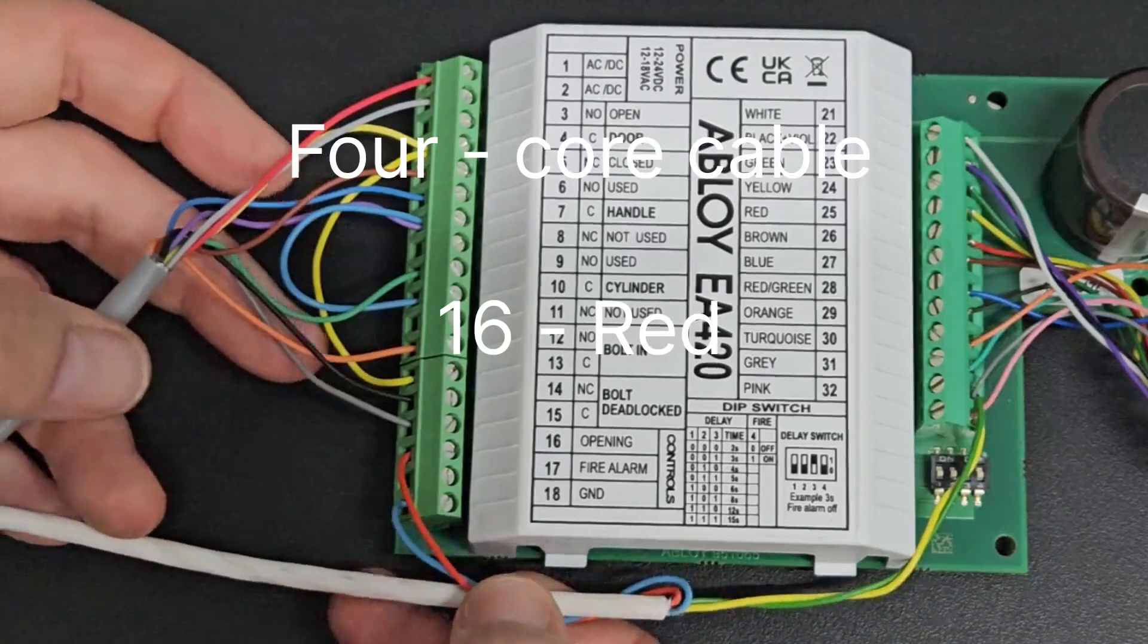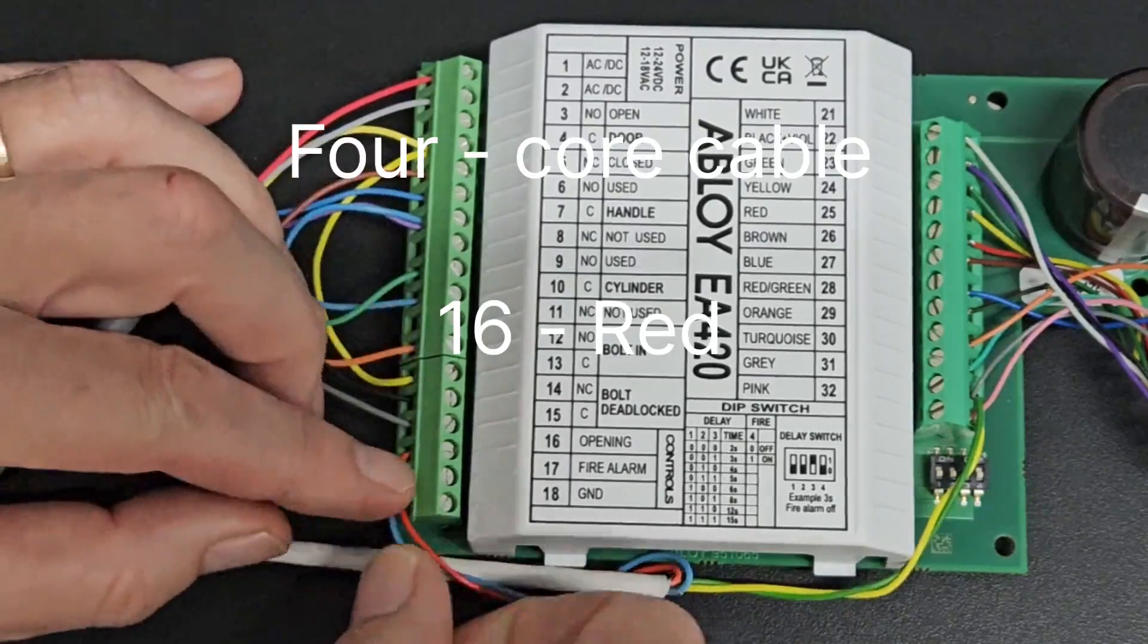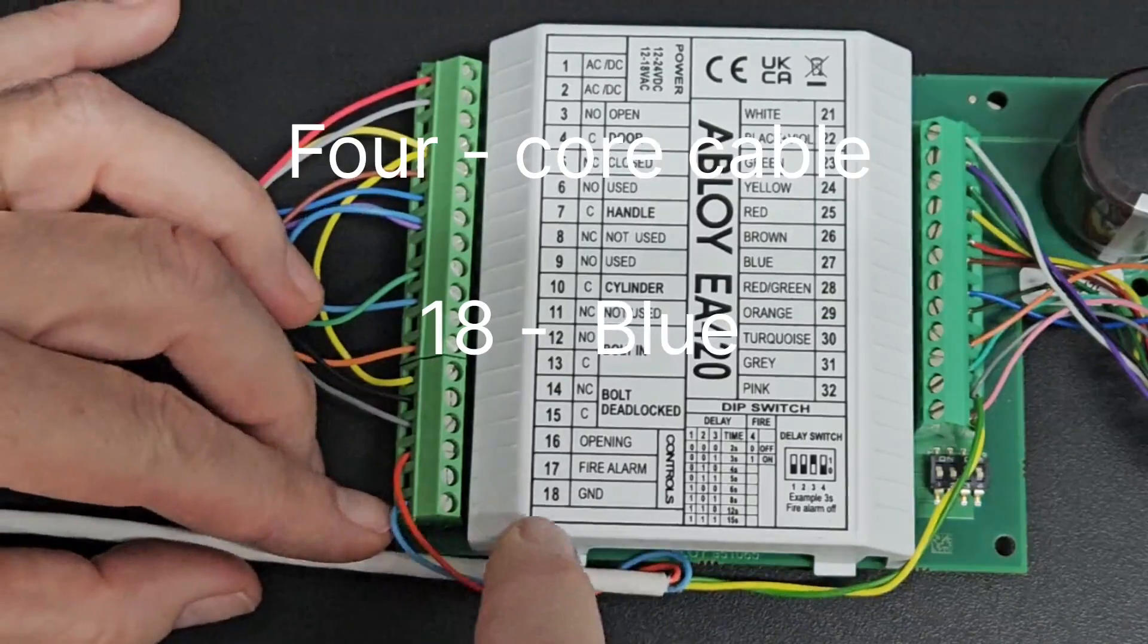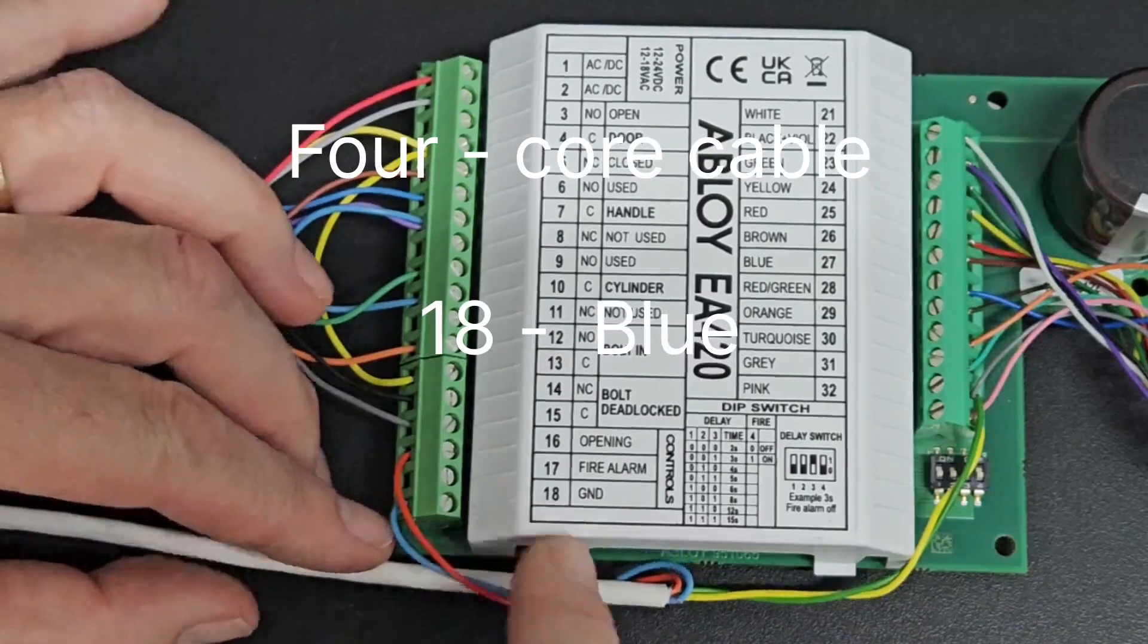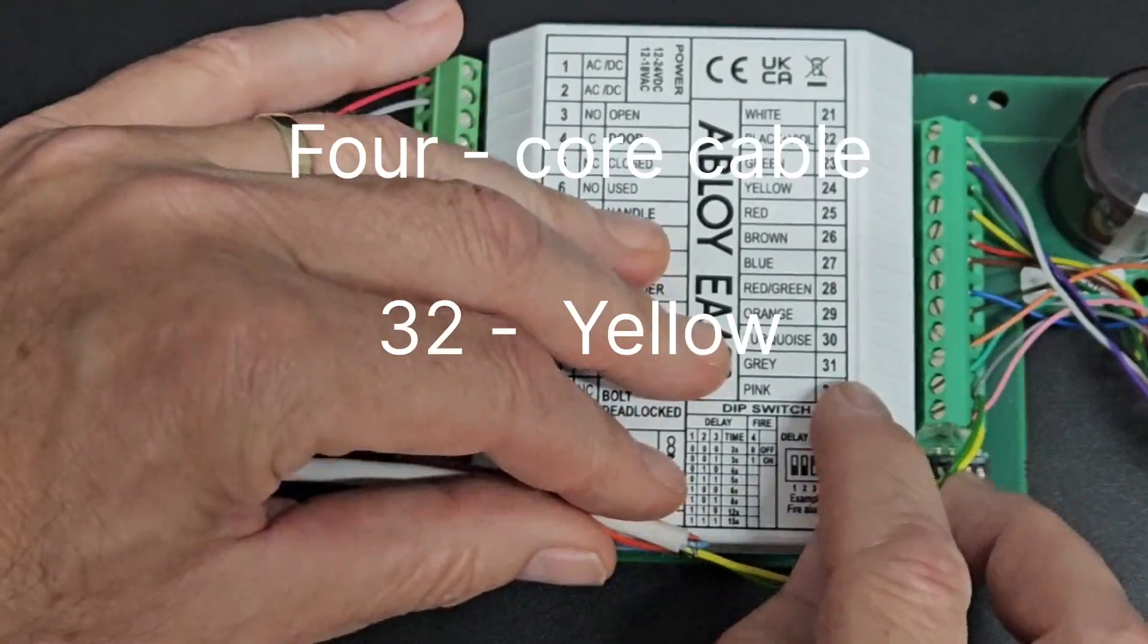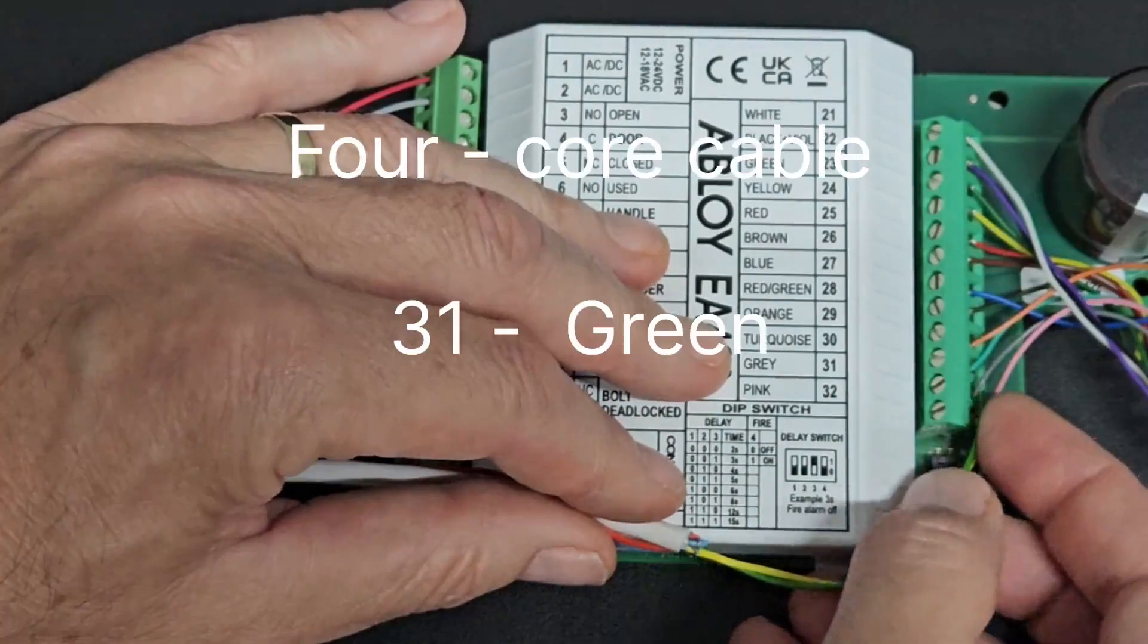From the 4-core cable, we put a red wire into number 16, and we put a blue wire into 18. Around the corner here, we put a yellow wire into 32, and a green wire into 31.